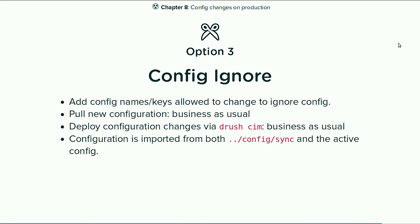The third option is with config ignore, which lets you skip the extra export step. You decide which config is okay to ignore. Then you pull the configuration and run config import. The configuration is imported from the files, but also some from the active storage — it goes into the magic config filter storage, nothing will have changed in this ignored configuration, so it will not get removed. This departs a little from the philosophy that all your configuration is in the files and therefore reproducible, but it can be a solution for this case.